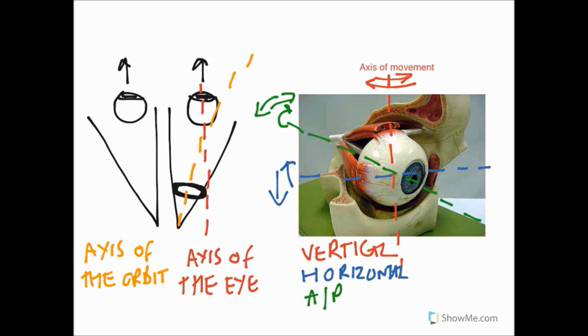The common tendinous ring is in line with the axis of the orbit, so we're going to draw on a muscle here. This muscle, it's just an example, it's called superior rectus. The point I want to make is that because the attachment of this muscle comes from the common tendinous ring which follows the axis of the orbit and not the axis of the eye, it means that we don't just get pure elevation with this particular muscle.